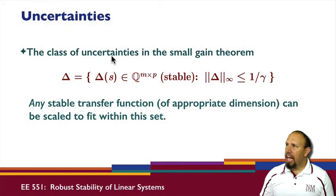So the class of uncertainties in the small gain theorem now, we can have it this way. So if delta is some stable rational, so this, the q stands for rational functions, so a m by p matrix, where the infinity norm is less than 1 over gamma instead of 1. So we can redefine our set of uncertainties this way. And any stable transfer function of appropriate dimension can be scaled to fit within this set.